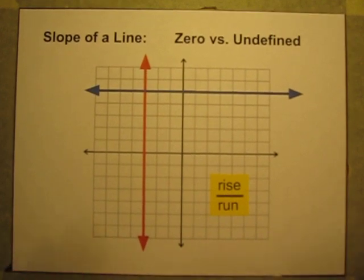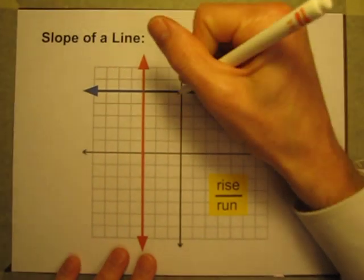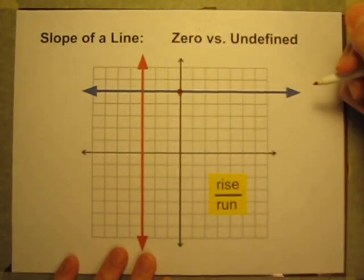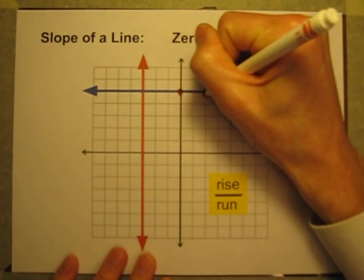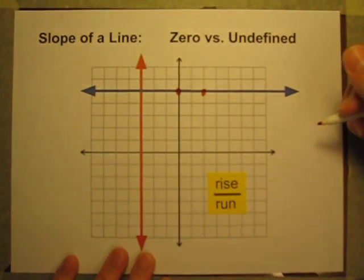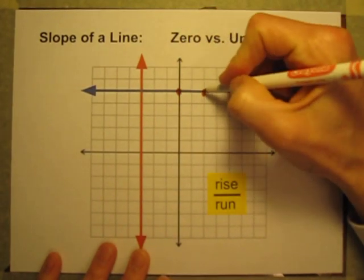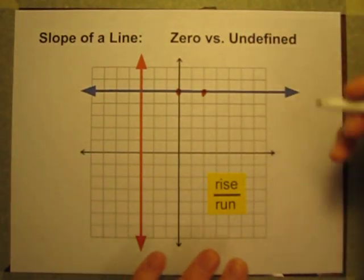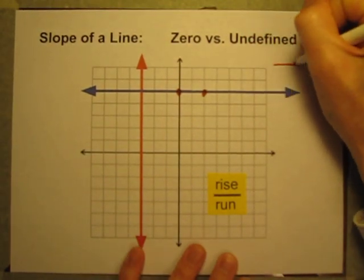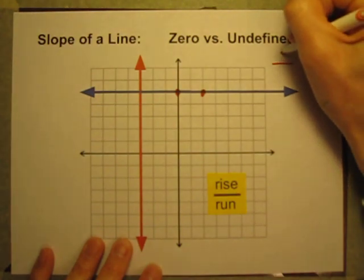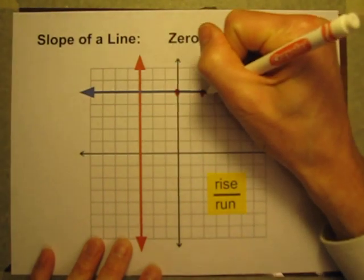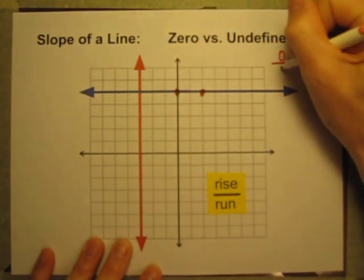Let's just pick a couple of points. For example, if I pick this point here and this point here, I can see that my rise, as I'm going from this one to this one, my rise is going to be, I'm going up and down zero, and my run, I'm going two to the right.